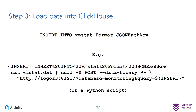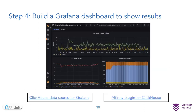To load data, I issue a SQL command: INSERT INTO vmstat FORMAT JSONEachRow. ClickHouse is now ready for a stream of data. For simplicity I'll stick the data in a file and load it with curl — doing an HTTP POST to ClickHouse's REST interface. That's all I have to do. Or if you want something more sophisticated, you can write a Python script. For my example system I wrote a script that accumulates lines ten at a time and pumps them into ClickHouse.